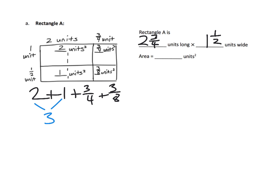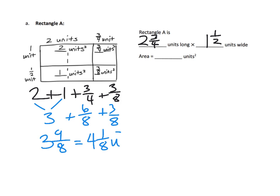Using common denominators, three-fourths can be renamed as six-eighths, so we end up with three and nine-eighths square units, which equals four and one-eighth square units. That is our answer: four and one-eighth square units.